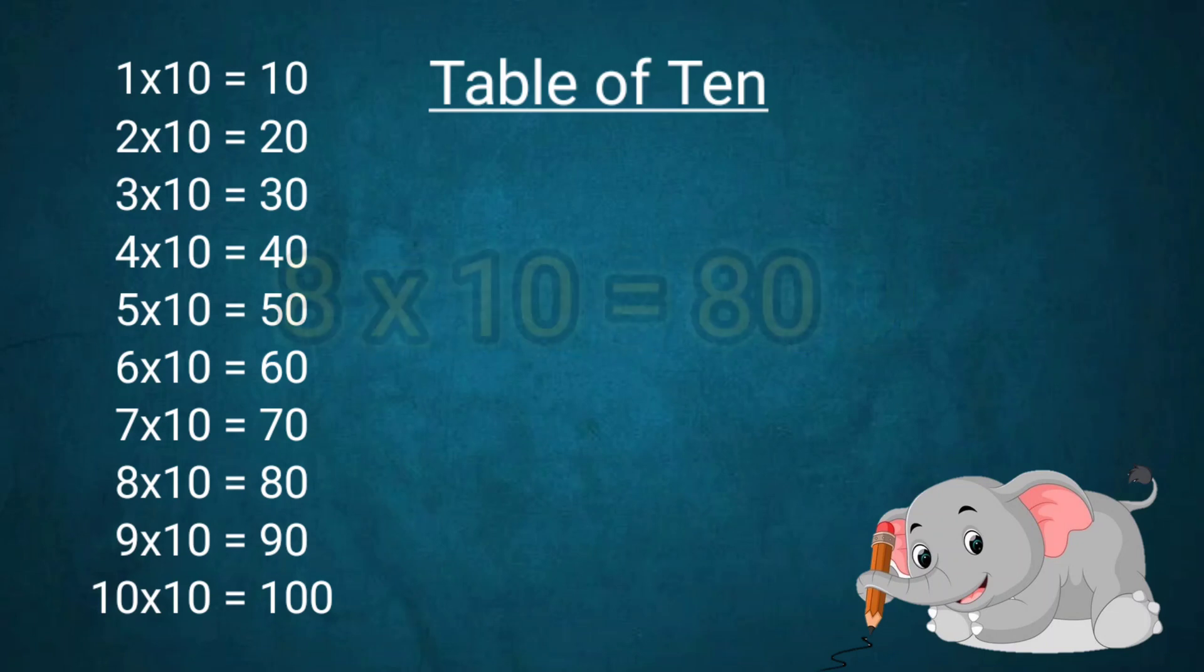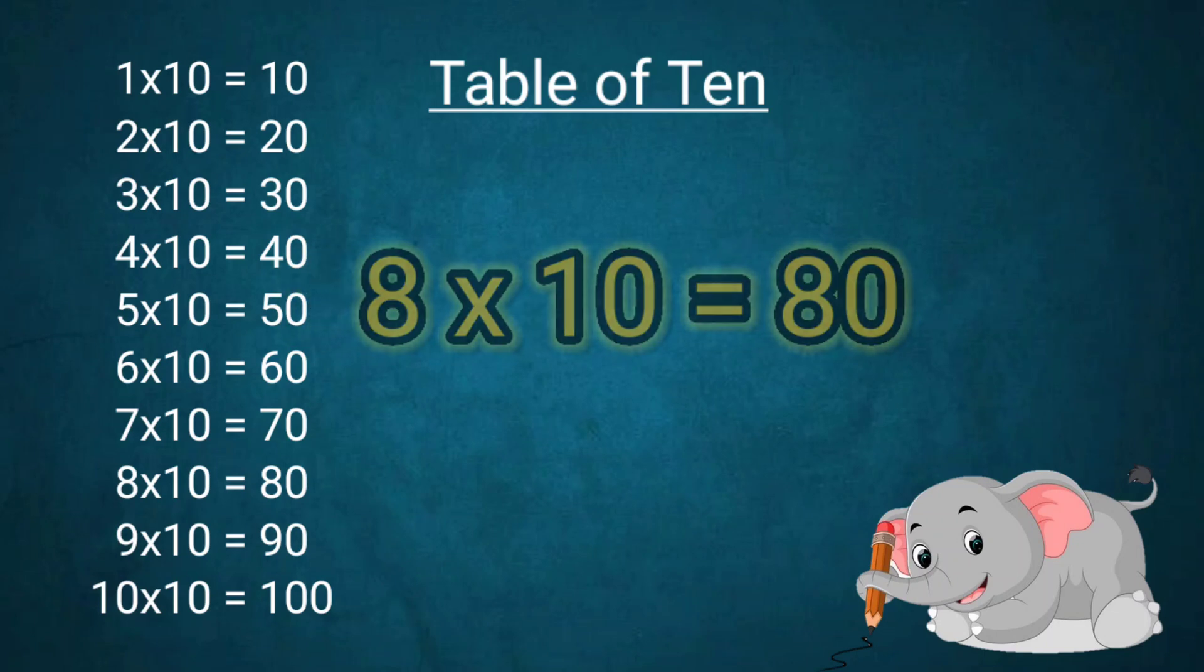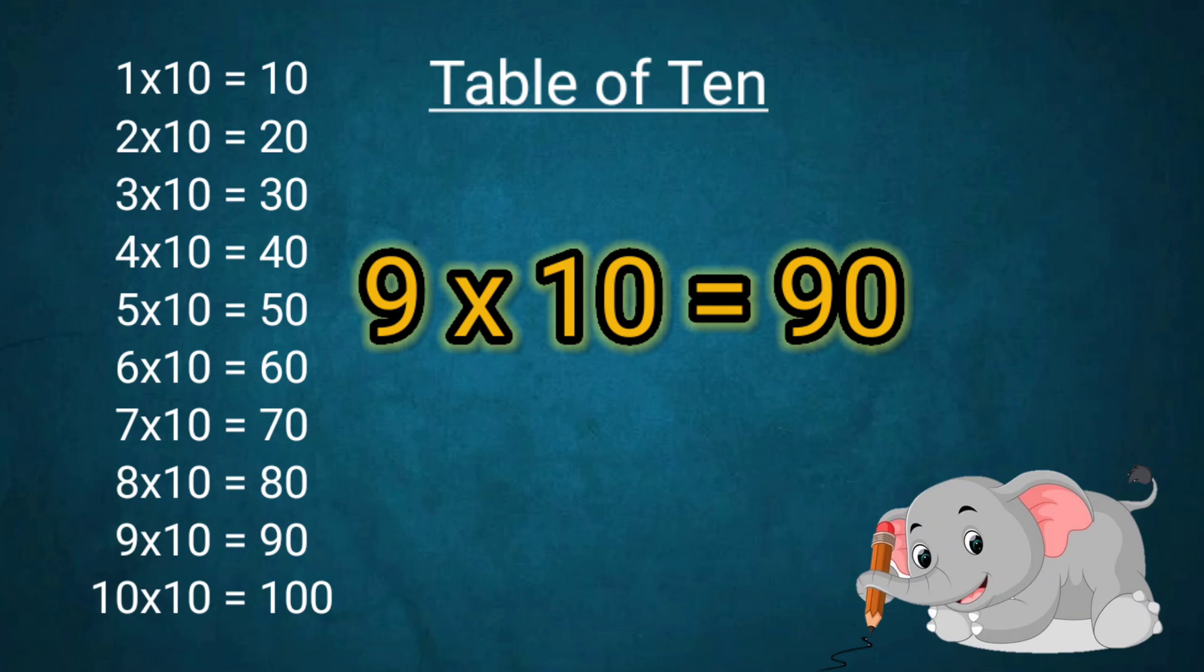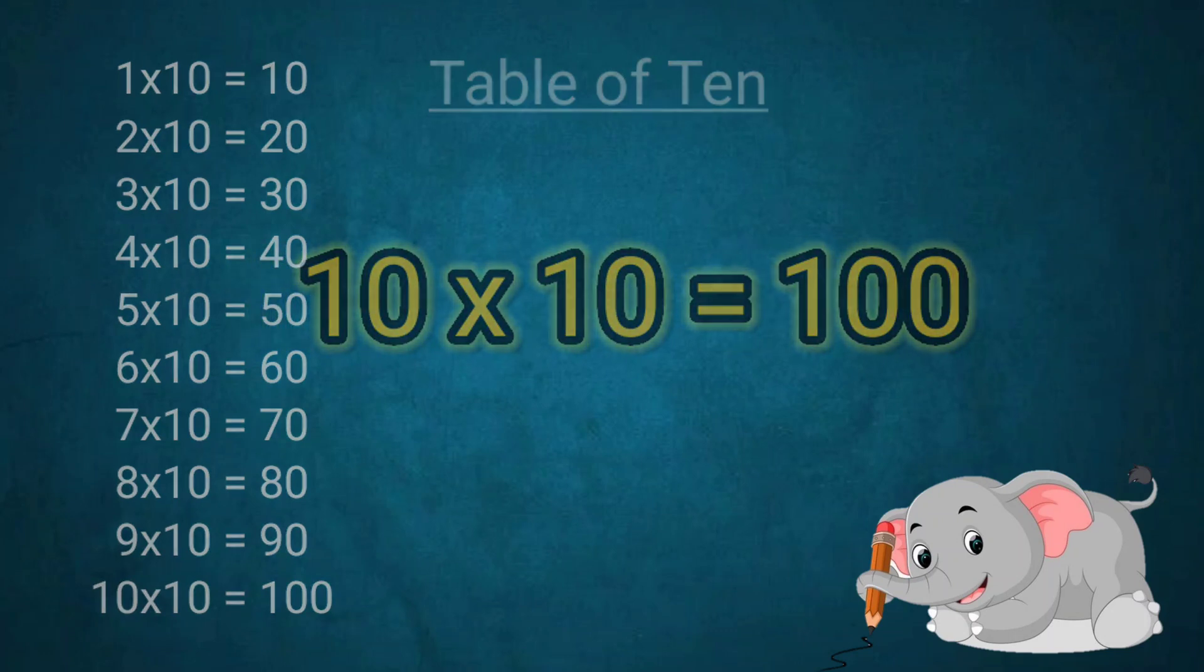Table of 10: 7x10=70, 8x10=80, 9x10=90, 10x10=100.